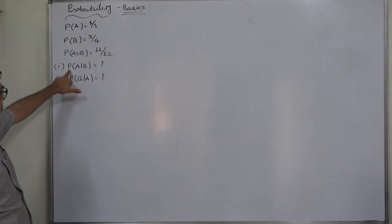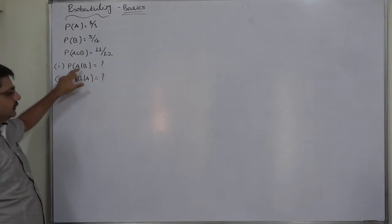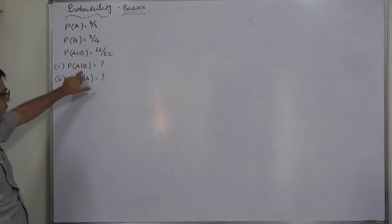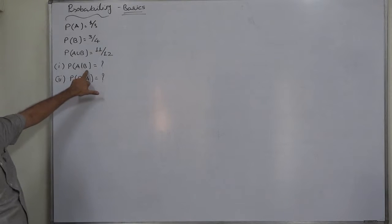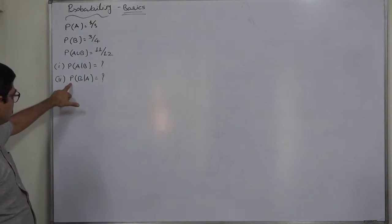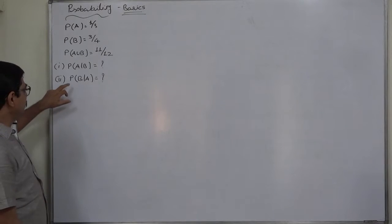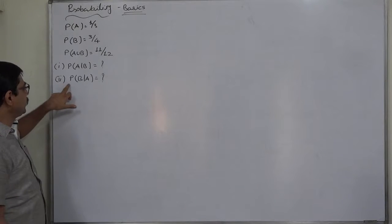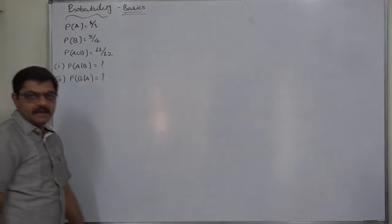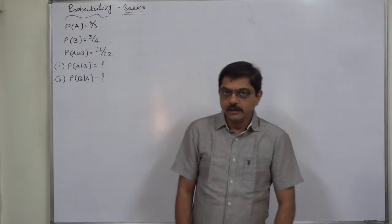What is the probability of A given B? That is, what is the probability of happening of A if B has happened? And the second question is: what is the probability of B given A? That means, what is the probability of happening of B if A has happened?